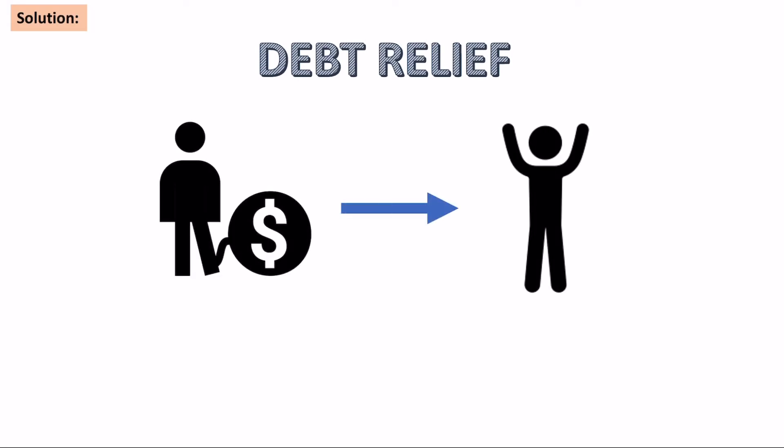There is a solution to this. One of the solutions is the idea of debt relief, which essentially means that debt is cancelled out — the forgiveness of debt. This applies to organisations, individuals, or corporations that owe a lot of debt, but in this context we're talking about countries — sovereign states — where their debt is cancelled out or they come up with a system where they pay it over a longer period of time. The key idea is that debt is normally just completely scrapped from their payment.